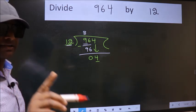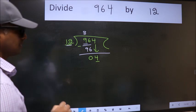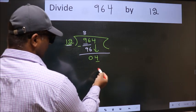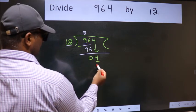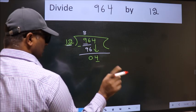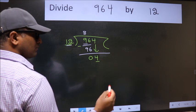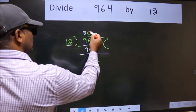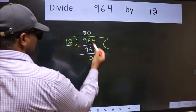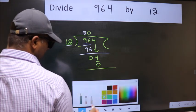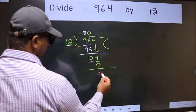Instead of that, what we should think of doing is which number should we take here. If I take 1, we will get 12. But 12 is larger than 4. So what we do is we take 0 here. So 12 into 0, 0. Now we subtract. We get 4.